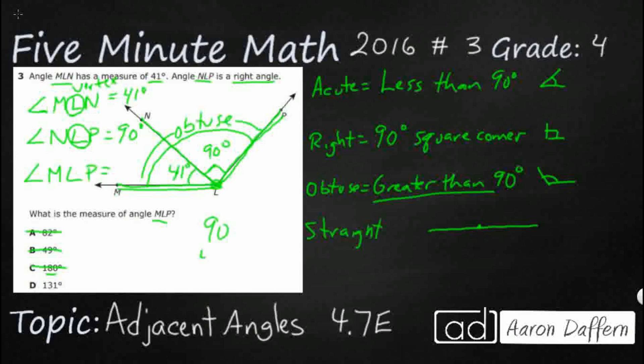If we wanted to, we could add these up. 90 and 41, since they're adjacent, we can just add them up. But that's the only one that's left is D, 131.